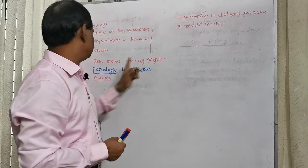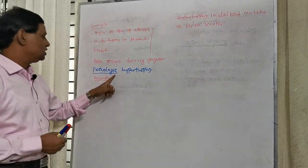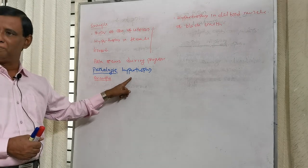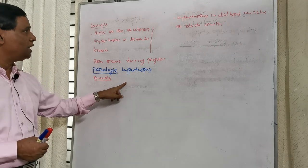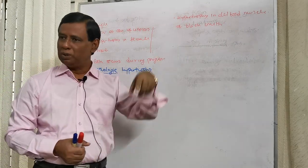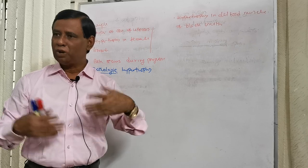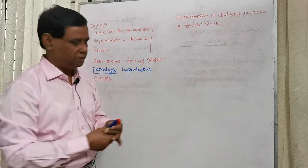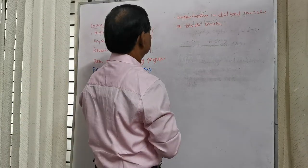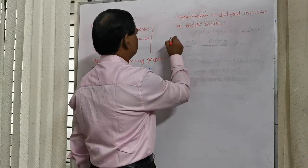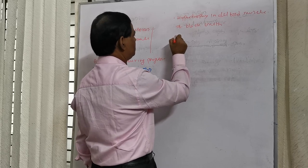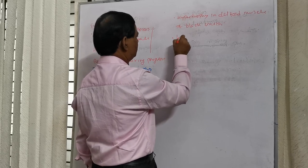So this is the example of pathologic hypertrophy — here hypertrophy occurs first, and pathology follows. Another example: left ventricular hypertrophy.